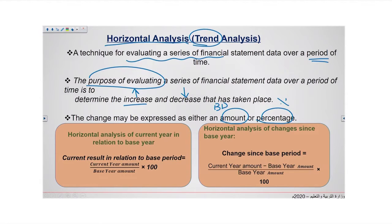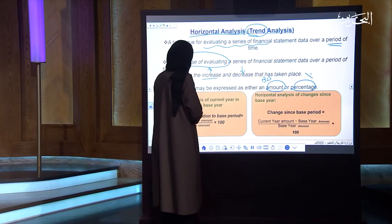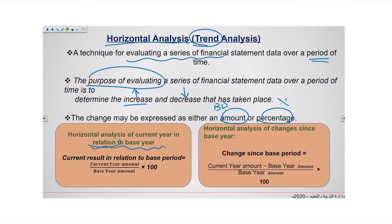We have two formulas for horizontal analysis. The first formula evaluates the current year in relation to the base year: current year amount over base year amount, multiplied by 100. The second formula calculates the change since the base period: current year amount minus base year amount, over base year amount, multiplied by 100. The difference is: the first formula gives the relation to the base year, while the second gives the change or increase or decrease.